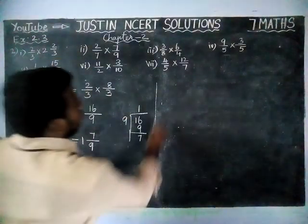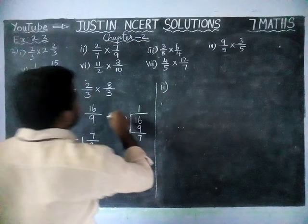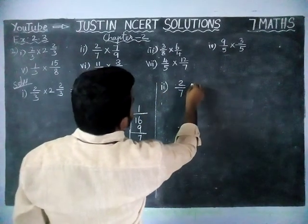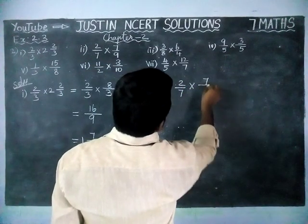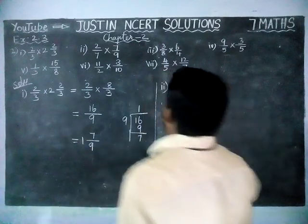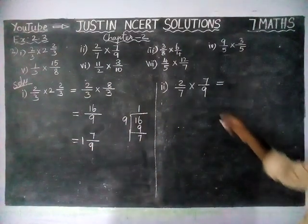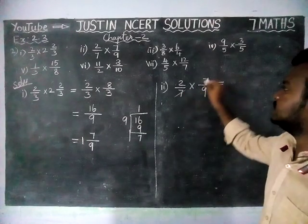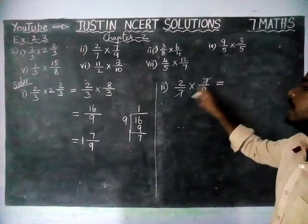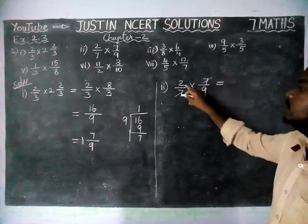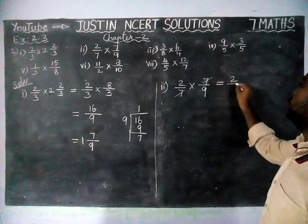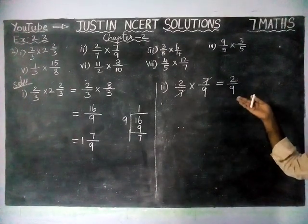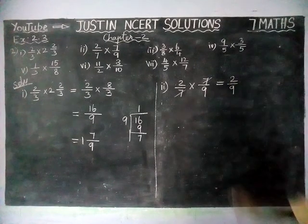Next, second question: 2/7 × 7/9 is equal to. Here if it is possible to simplify, we can simplify. Here 7 is a common number, so we have cancelled that. So the answer is 2/9, and this is a proper fraction, we cannot simplify further. So 2/9 is the answer.